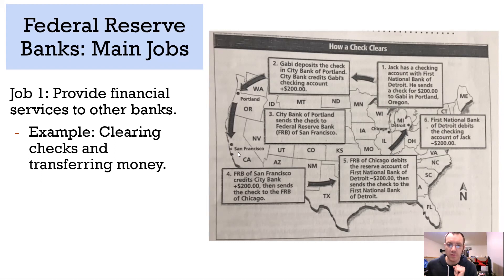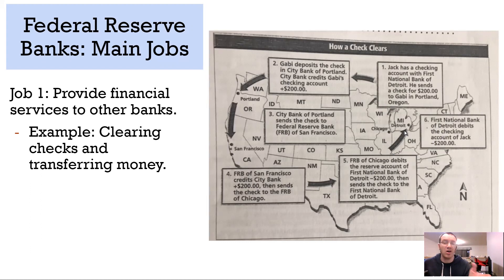San Francisco will then give that money to the Bank of Portland. The Bank of Portland gives that money to Gabby. And so you have this flow, this cycle. Therefore, all that the banks have to do in this case is give the checks to the Federal Reserve, and the Federal Reserve gets all the money.